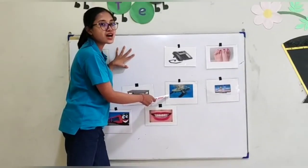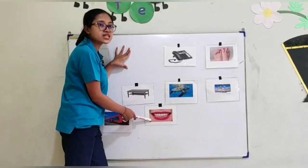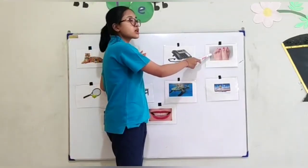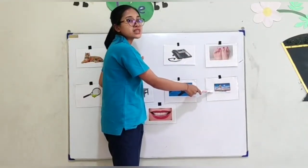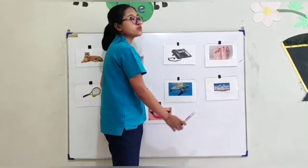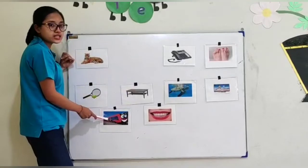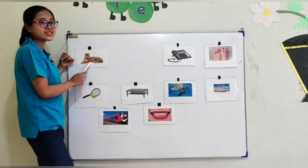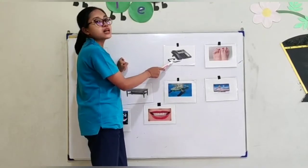How about this one? This is fish — fish, good! And we call these toes — toes, toes. And the last one is television — one more, television, good job! Let's review: this is table, this is train, this is tiger, this is telephone.